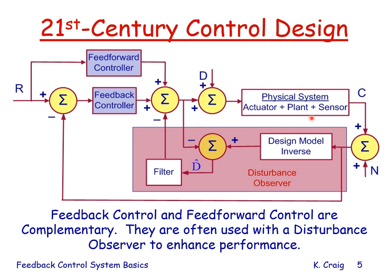The goal of feedback control is multifold. We want to guarantee absolute stability of the closed-loop system, reject disturbances, make the system insensitive to changes in physical system parameters, and insensitive to unmodeled high-frequency dynamics or noise. We also want performance — we want the controlled variable to track the reference input. So absolute stability, performance, disturbance rejection, and robustness are the goals of 21st century control design.